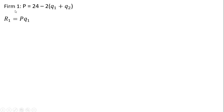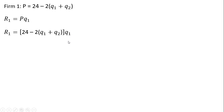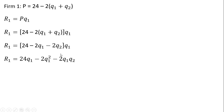We're going to start from firm 1. Firm 1's revenue is price — the market price — times the output of firm 1. I'm going to substitute in the inverse market demand expression for P, so everything in brackets is just the inverse market demand, multiplied by firm 1's output. Simplifying what's in brackets — minus 2 times the output of firm 1, minus 2 times the output of firm 2 — we get this result. Then multiplying through: 24 times Q₁ minus 2 Q₁² and so on.